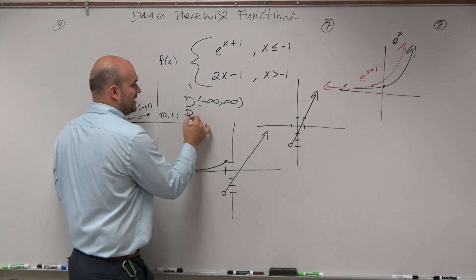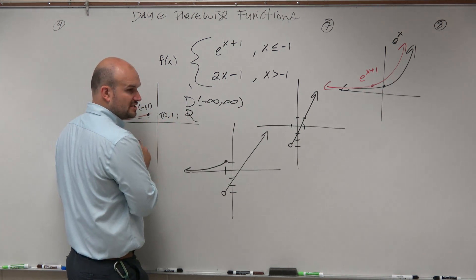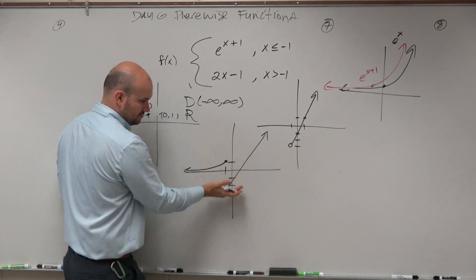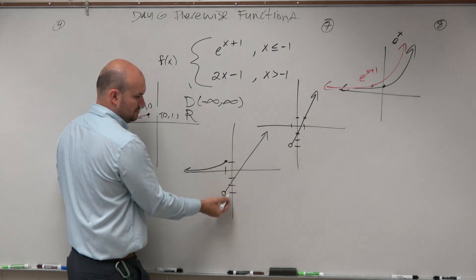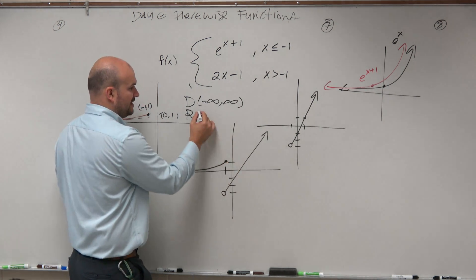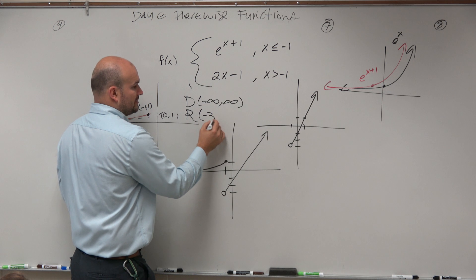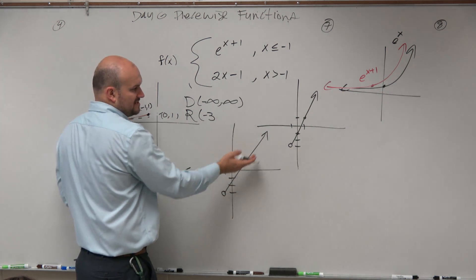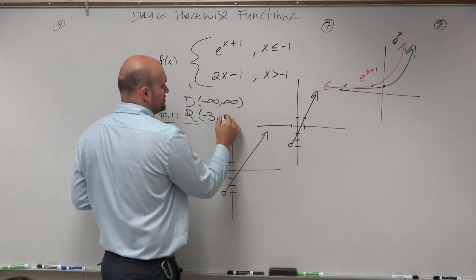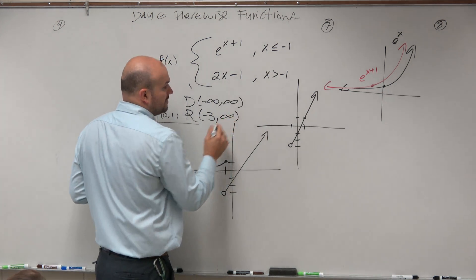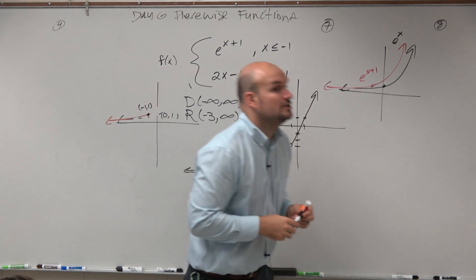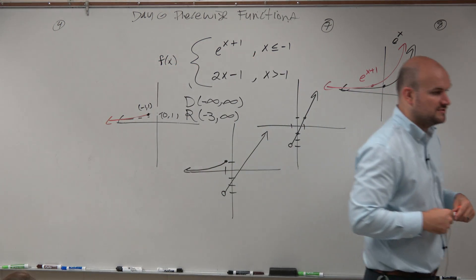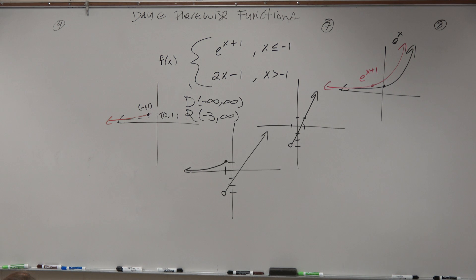The range — we've got to see how low this graph goes. It goes to negative 3, which is not included. Then the graph continues all the way up to infinity. You will need to know how to identify the domain and range from a graph as well.